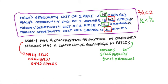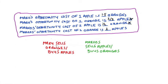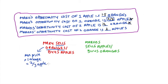We can understand prices in this market as telling us the rate at which we swap between goods. If trade happens, Mary is going to be selling oranges. Looking at her opportunity cost, when she makes one orange she gives up two thirds of an apple. So the minimum price Mary would accept for oranges in terms of apples is two thirds of an apple per orange. If the price per orange were any lower, Mary wouldn't even be covering her cost of production.